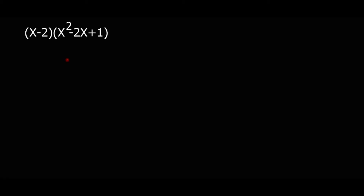Now we will multiply a binomial by a trinomial. Remember, a binomial is an expression with two terms and a trinomial has three terms. So we multiply this bracket — the binomial — by this bracket — the trinomial. We multiply the same way: multiply everything — this term times each of those terms, and then that term times each of those terms.